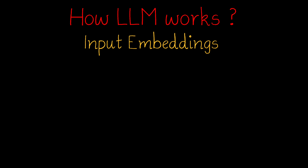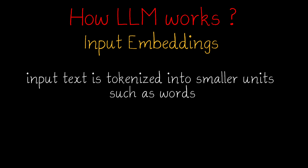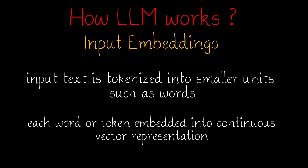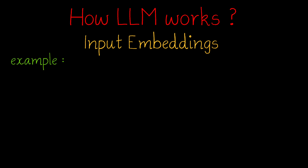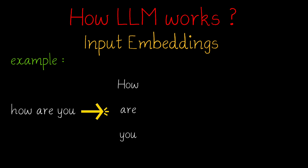First, we have input embeddings. In this, the input text is tokenized into smaller units such as words. Then, each word or token is embedded into a continuous vector representation. For better understanding this concept, let's look at an example. Let's say 'how are you' is the text given as the input. This input will be separated as individual tokens, with additional start and end tokens for knowing the start and end of the sentences.